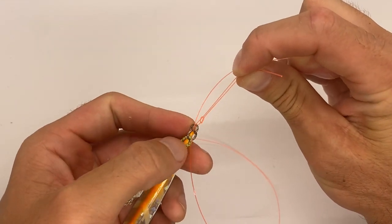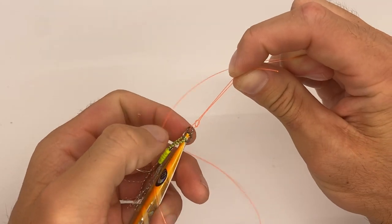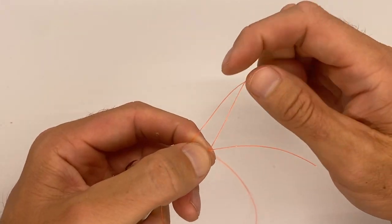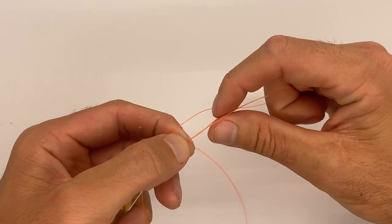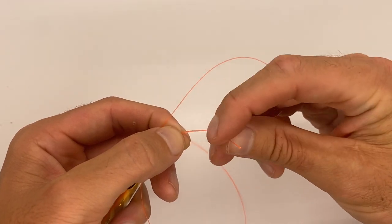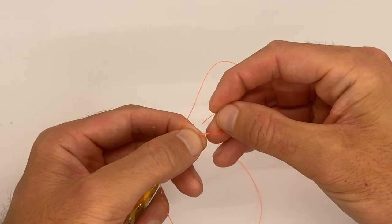So you've got a loop, but it's not too much. Now, what you want to do is take the end of your line and wrap it two or three times. We'll go two here.